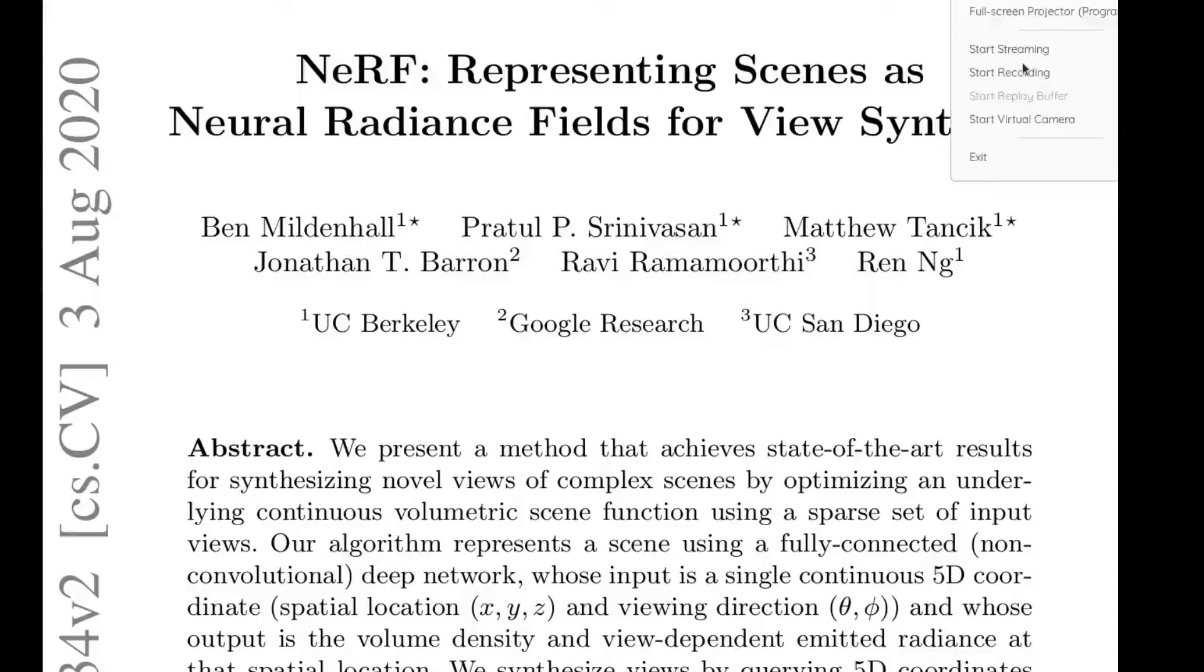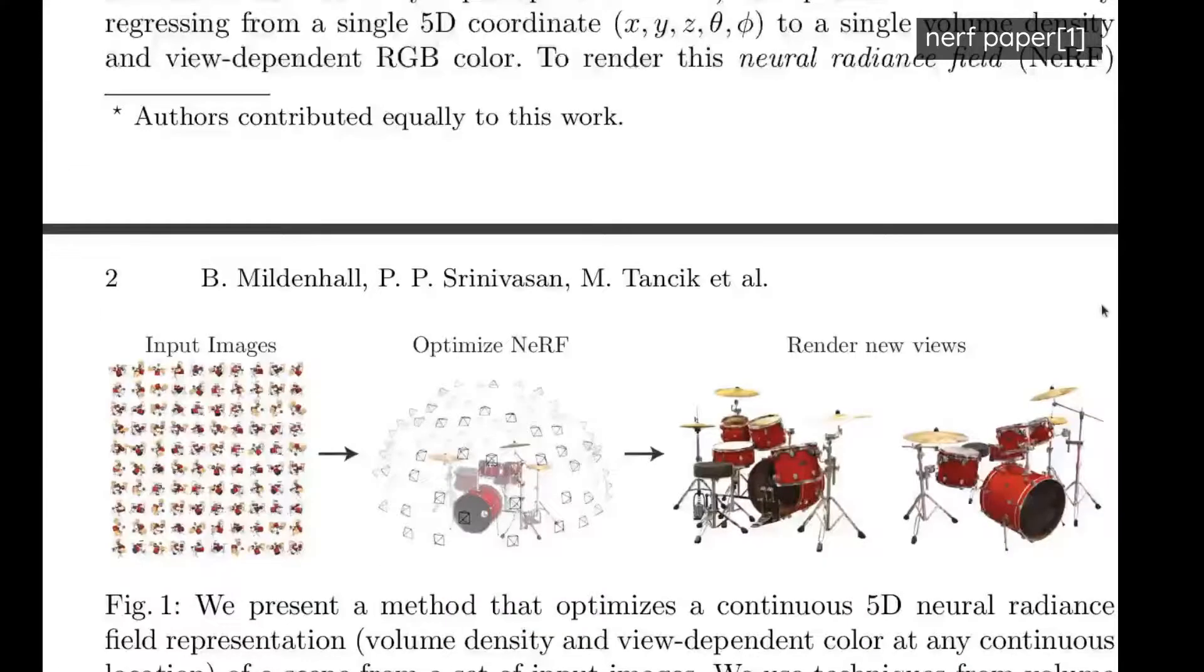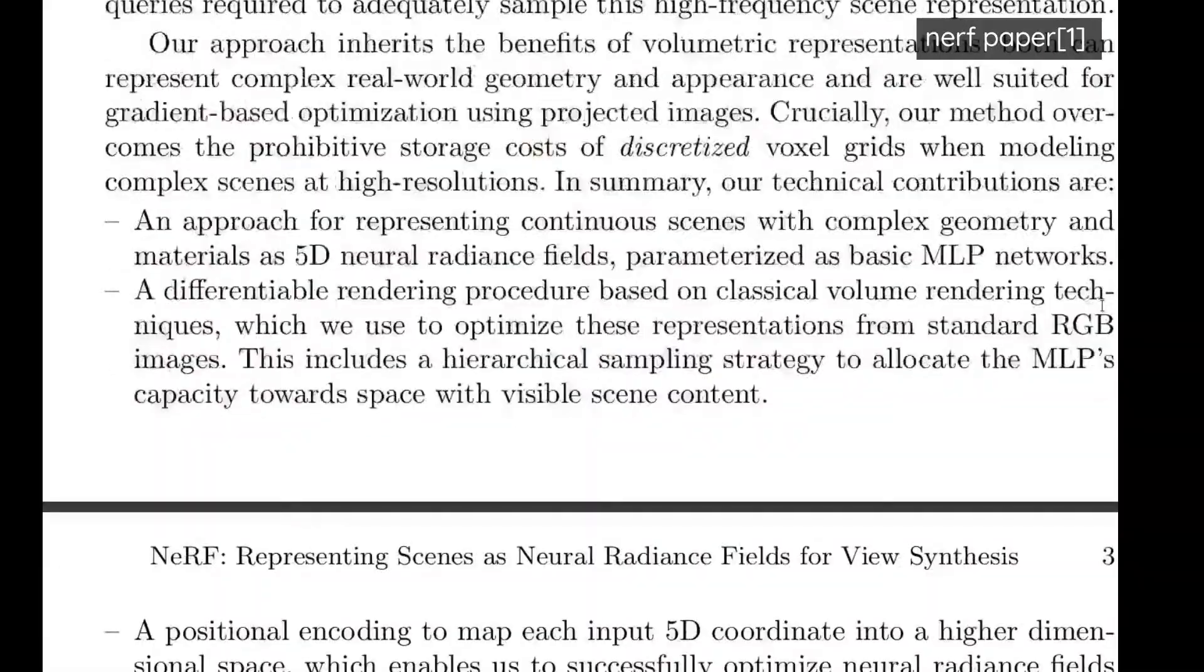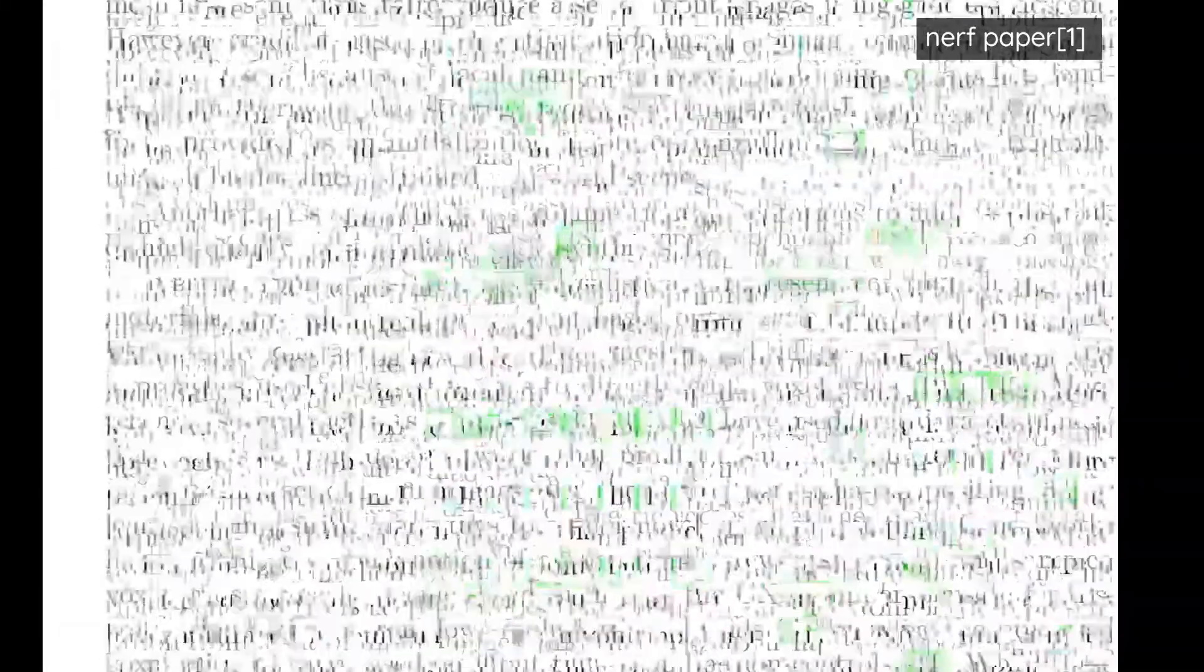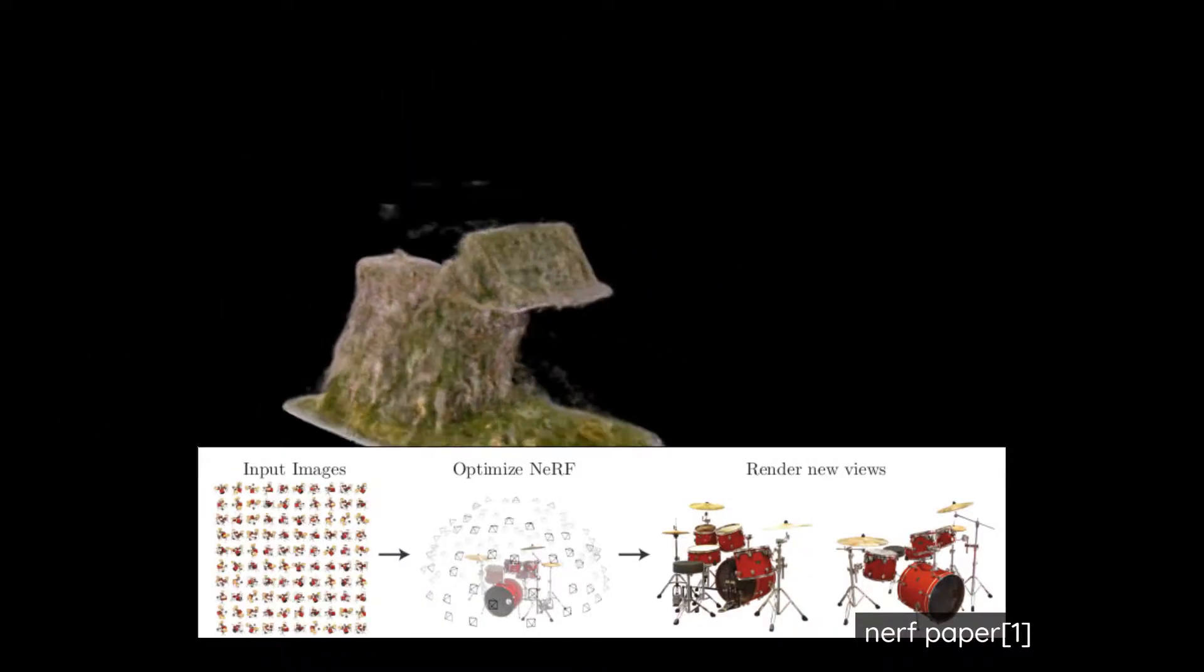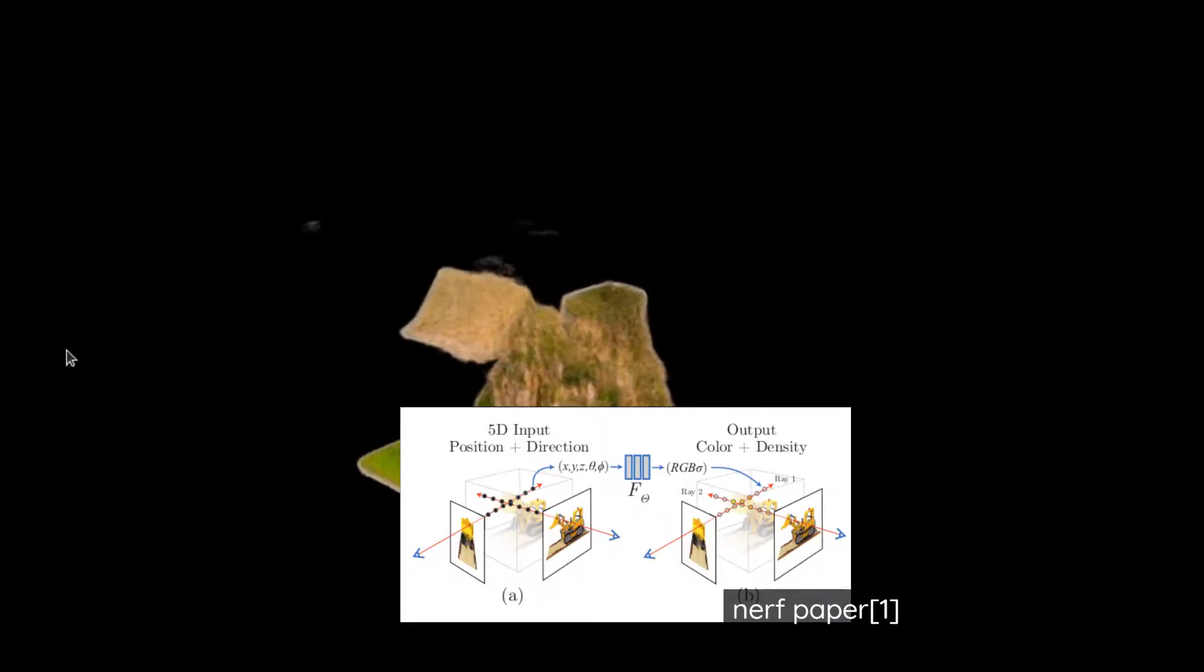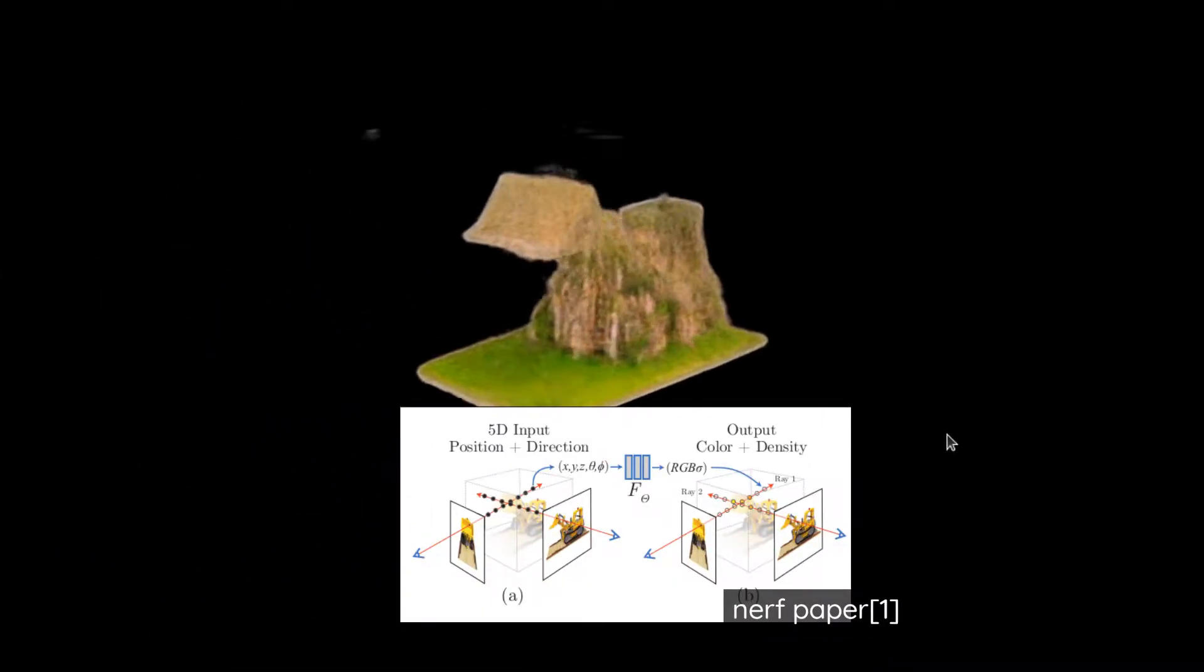This field kind of blew up when a seminal paper called NeRF, neural radiance fields, was put out and it had photorealistic renderings of objects through photogrammetry-like systems. So you take a bunch of pictures and then you would get out these 3D objects. The core idea is that you're giving a neural network a ray - so a position and direction - and you're getting back a color with transparency.